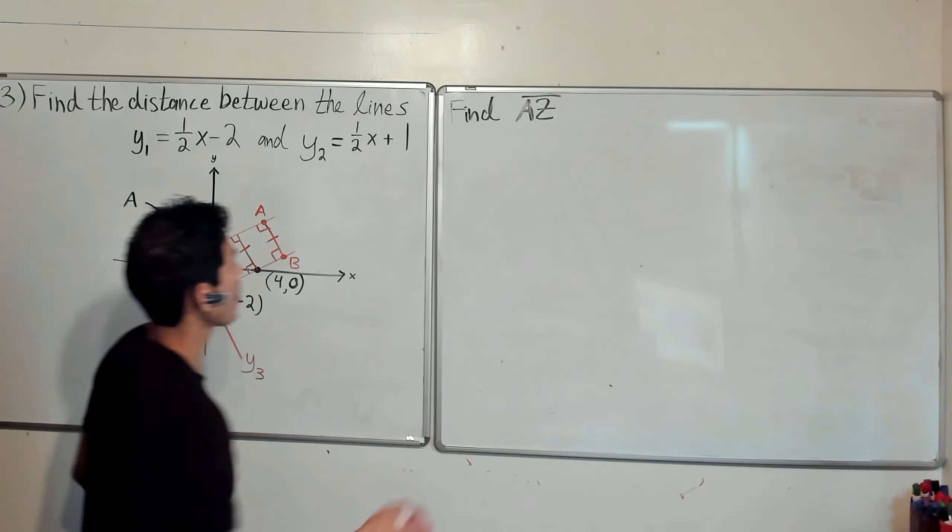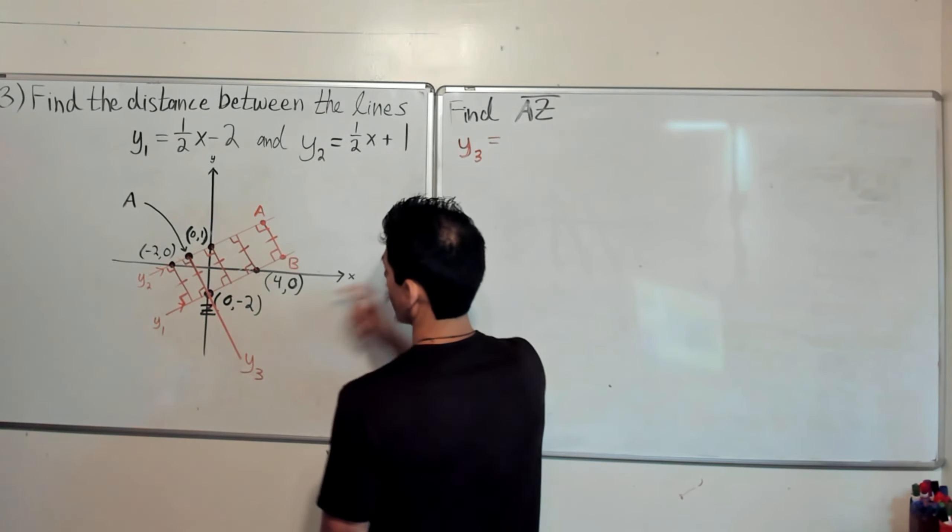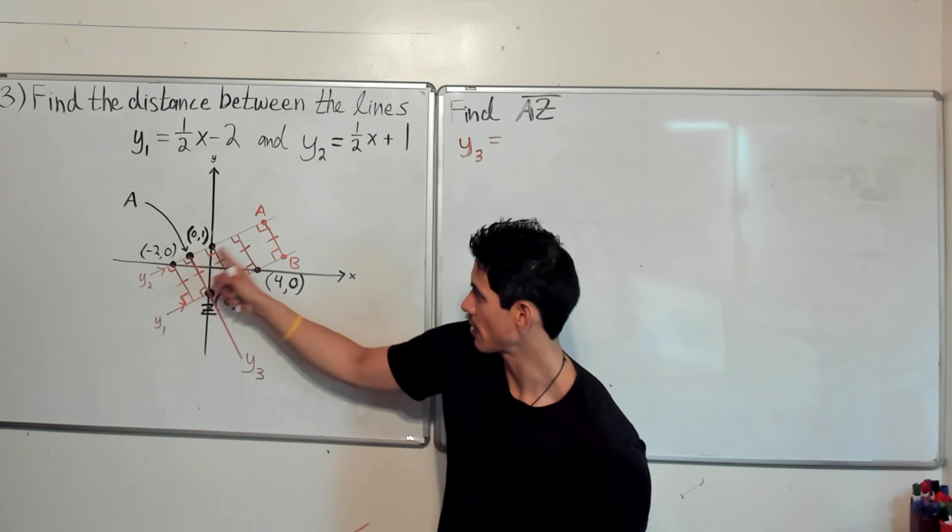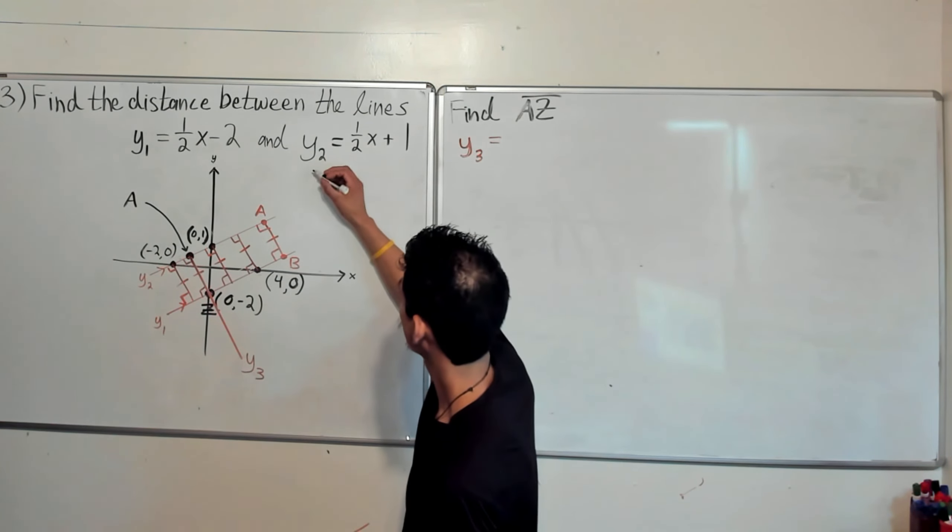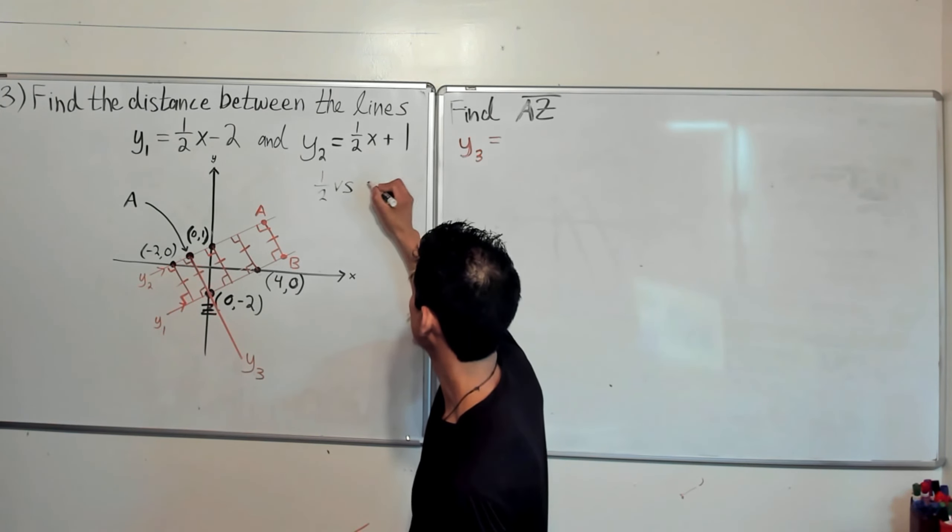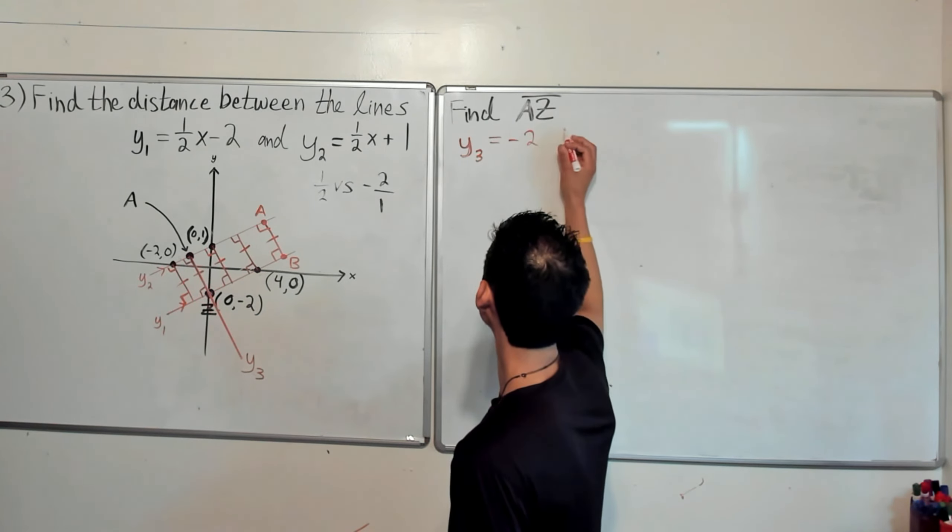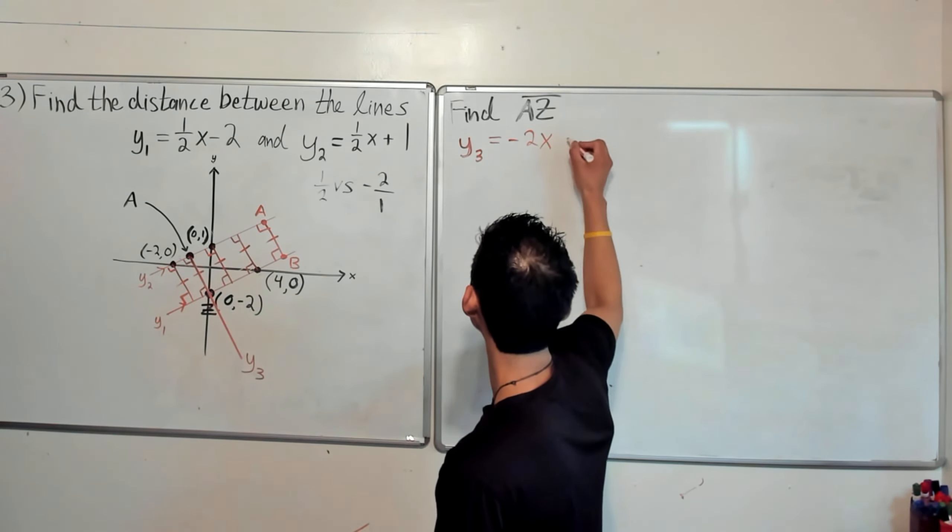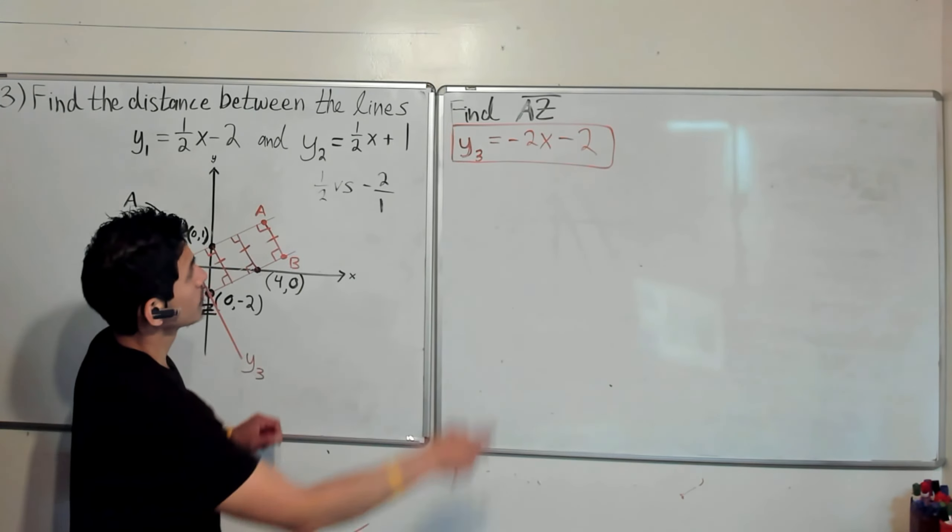So to find y3, and this is what I mean in how it's going to be pretty easy once you get the logic down. y3, see it goes through the point (0,-2). And since it's going to be perpendicular to y1 and y2, the slope is going to be negative 2 over 1. Because the slope here is 1/2. The opposite reciprocal of 1/2 is -2/1. If you flip it, change the sign. So then y3 will have a slope of -2. So the equation will be -2x - 2, because the y-intercept here is -2. So that's the equation of y3.